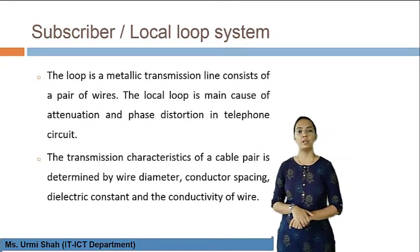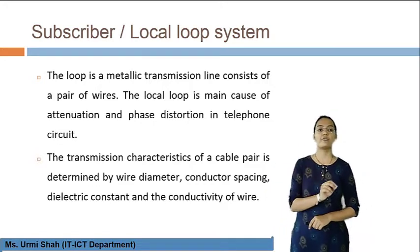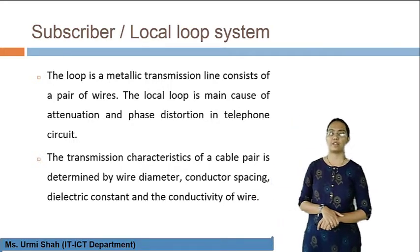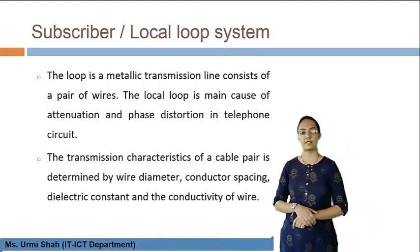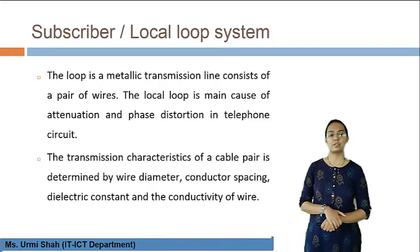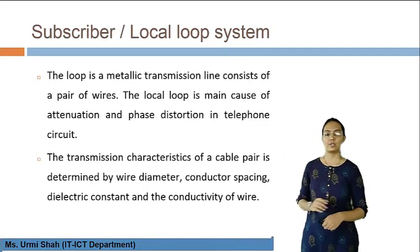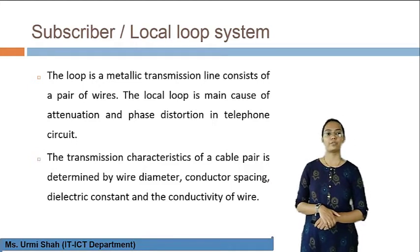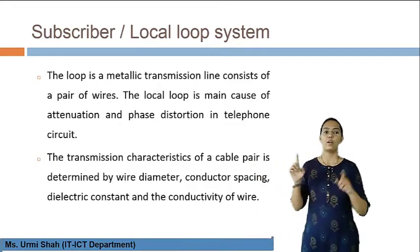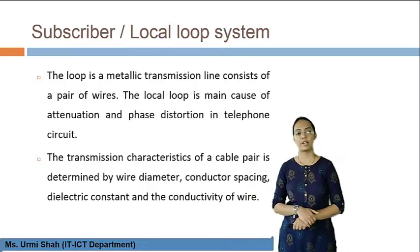The loop is a metallic transmission line which consists of a pair of wires. The local loop is the main cause of a connection, forming a network of wires. The transmission characteristics of a cable pair are determined by wire diameter, conductor spacing, dielectric constant, and conductivity of the wire. These are the characteristics of the cable used for connecting two telephone networks as part of the subscriber loop system.